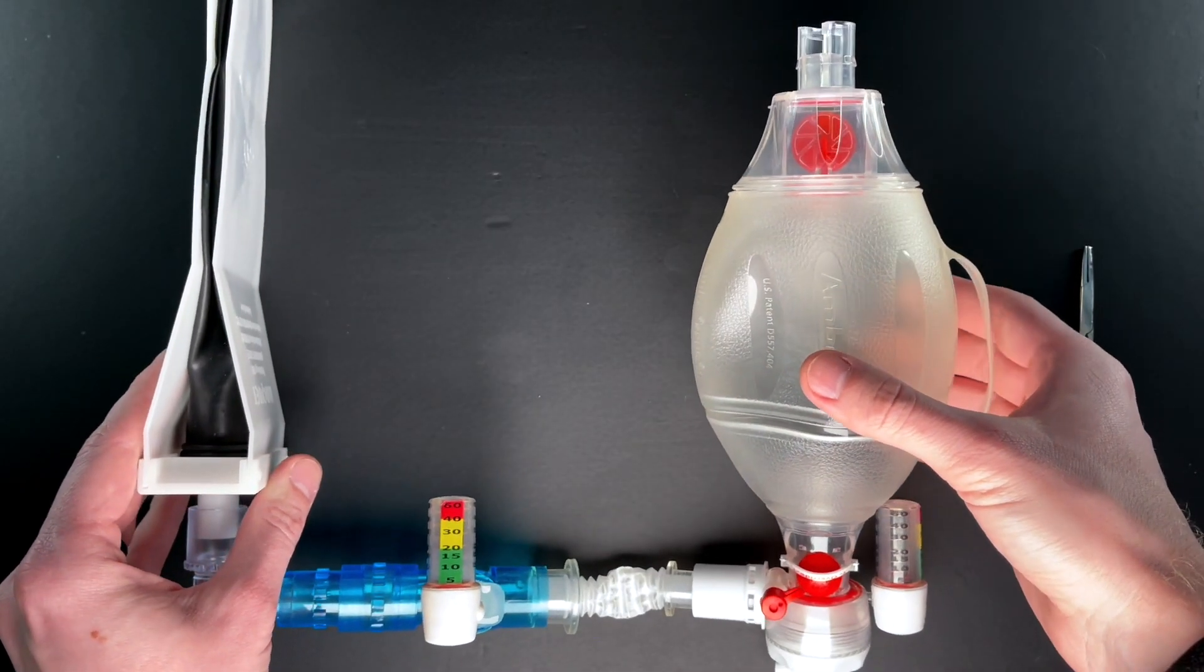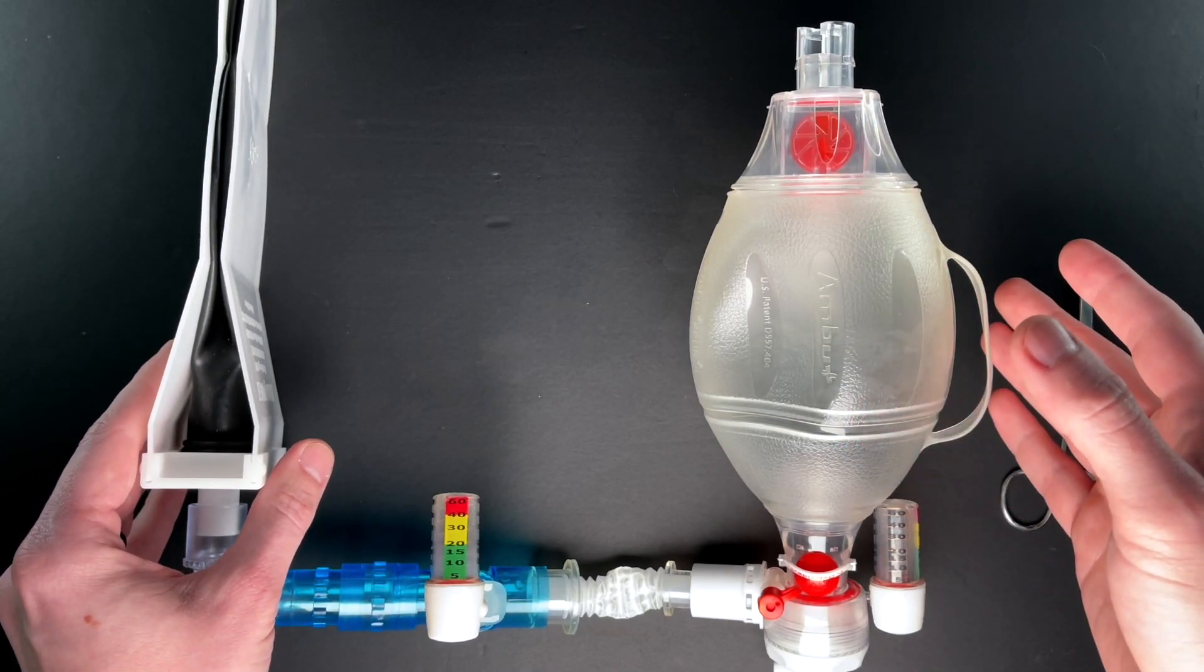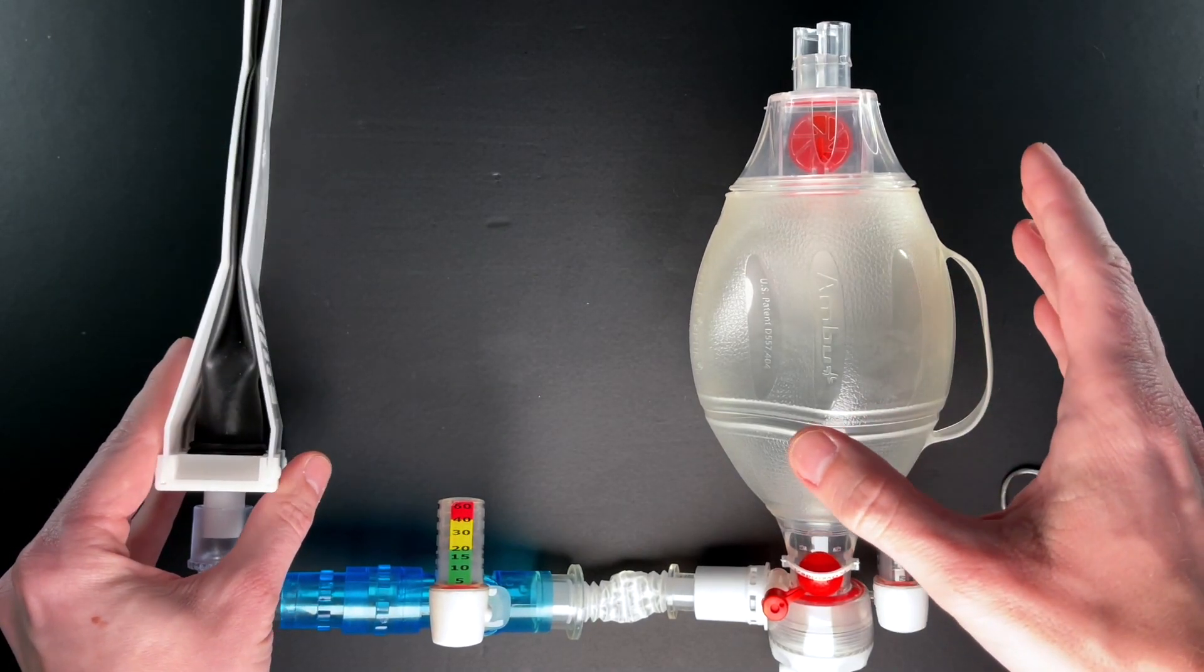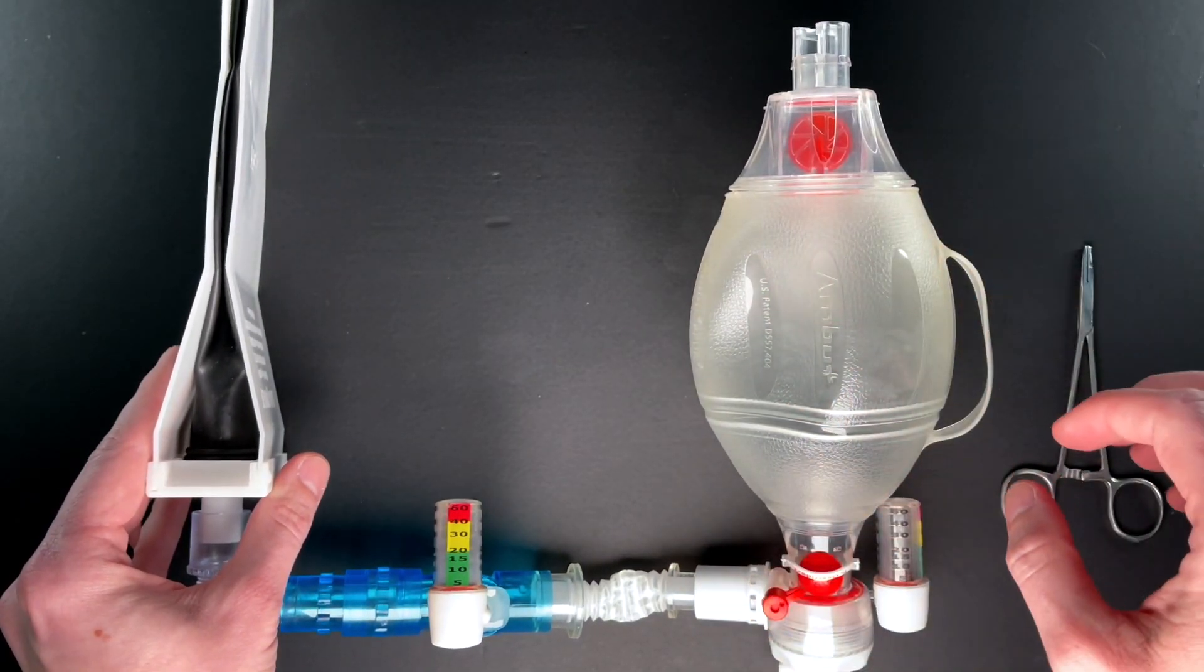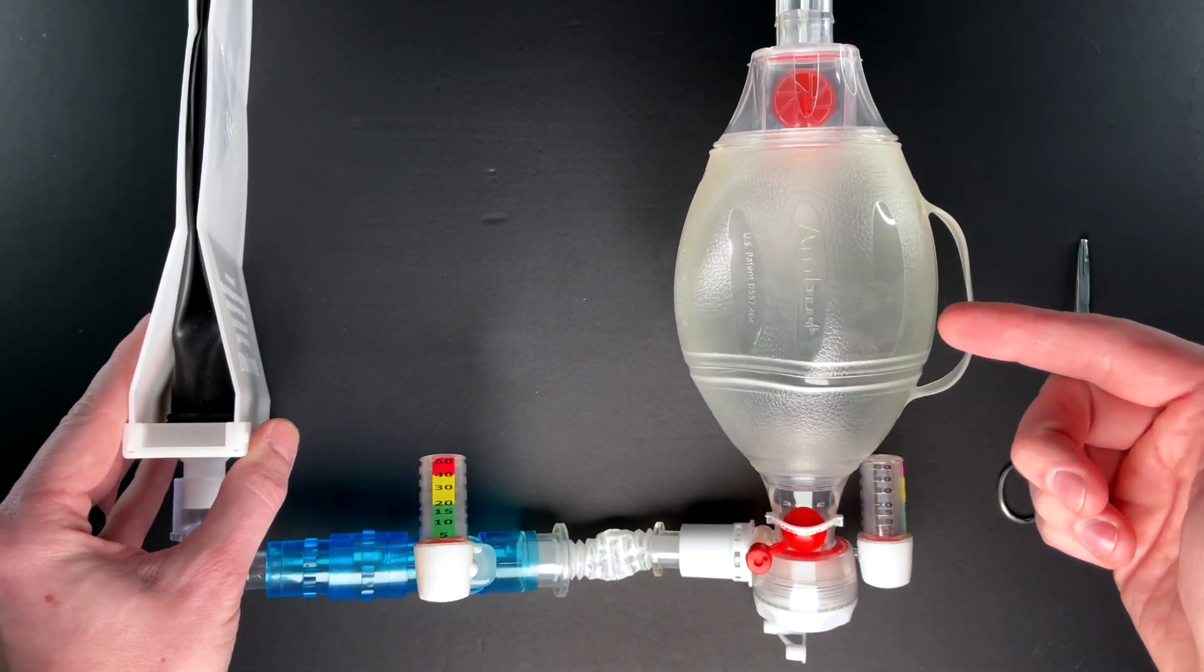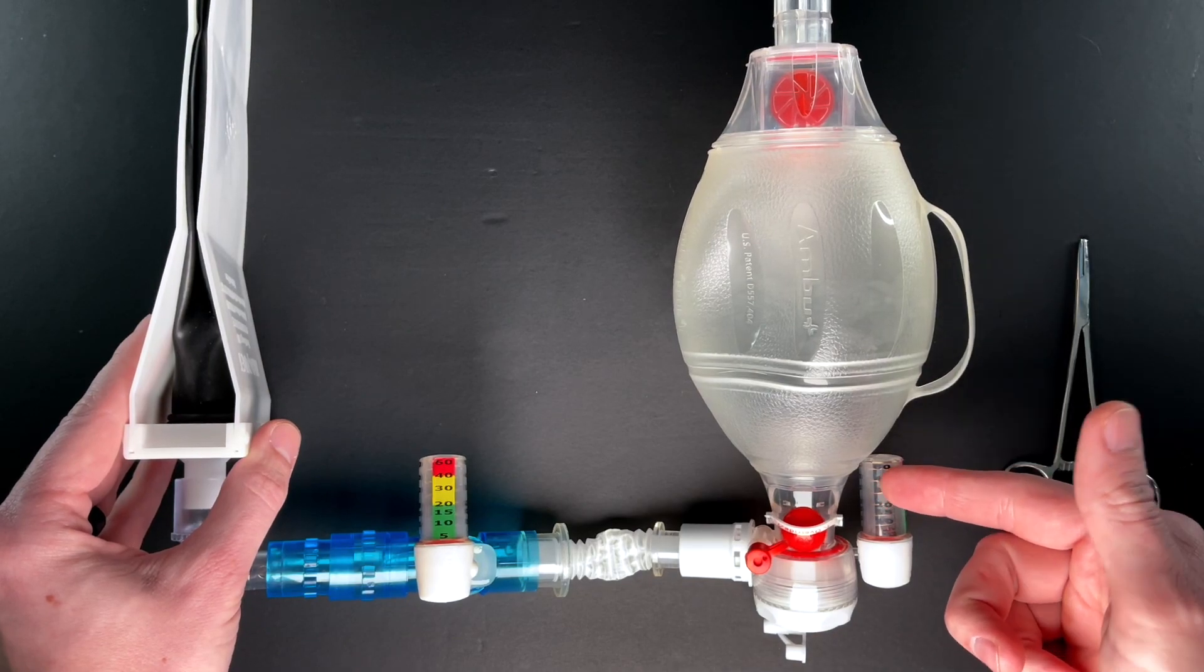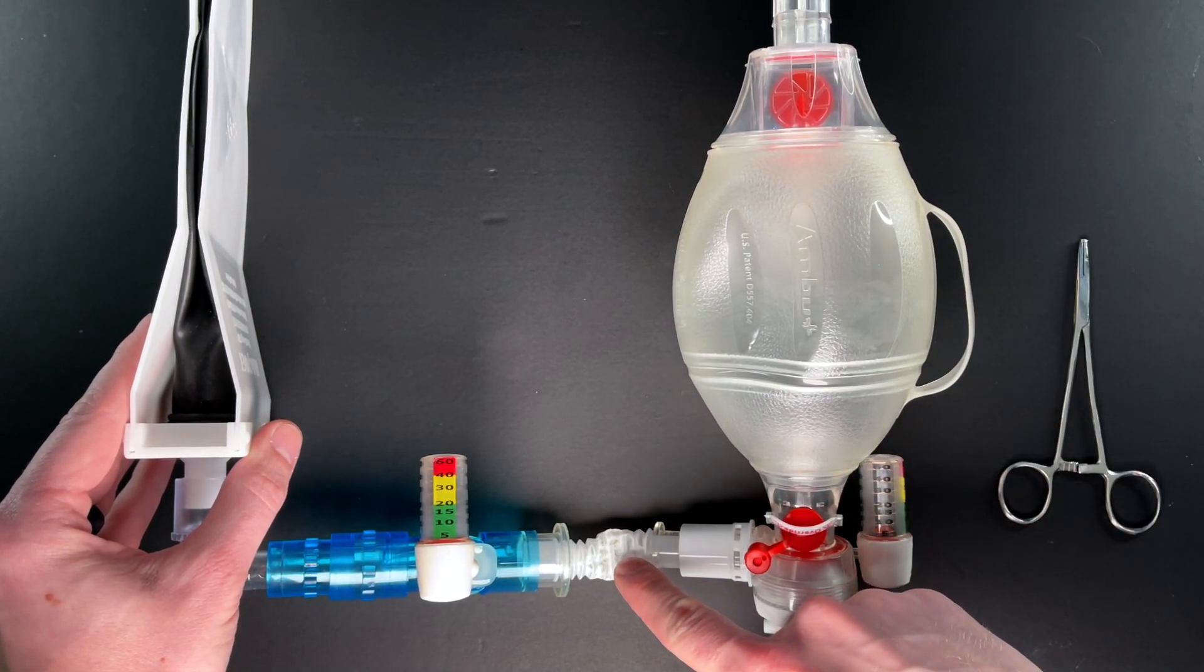Quick refresher on bagging somebody with increased airway resistance. We're looking at the difference between compliance and resistance. The setup here is just a bag valve mask with a pressure manometer that's going into a piece of flex.